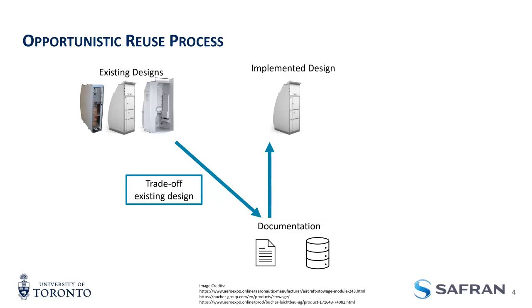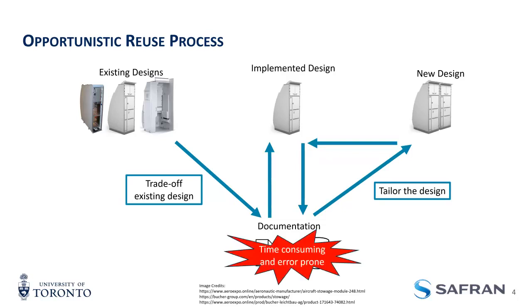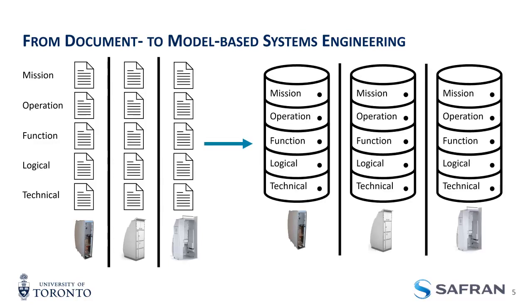The problem comes in if you need to make a change — you don't necessarily understand all the decisions that were made back in the day, so you have to go back into the documentation and try to find all that information. That's time-consuming and error-prone. This documentation used to be mainly document-based: for every stage, every abstraction level, you'd have one or multiple documents to go through to understand if a specific change would impact the design. Recently, though, there's been a shift to models — MBSE models — but these are individual siloed models for each project.